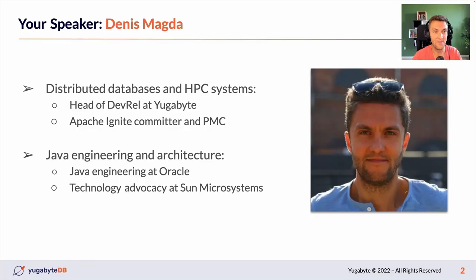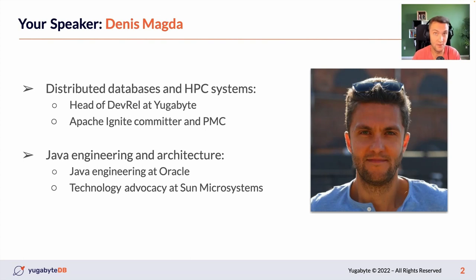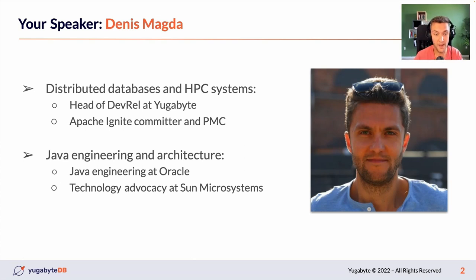A little bit about myself. My name is Denis Magda. I've been working with distributed databases and high-performance computing systems for the last eight years. Right now, I'm the Head of Developer Relations at Yugabyte — a distributed database that is built on PostgreSQL. Before that, I was contributing daily to Apache Ignite, which is another distributed database but designed for high-performance in-memory computing. Before distributed systems, I was on the Java engineering team at Oracle, developing GVM and GDK, and my professional career started at Sun Microsystems where I was advocating for various technologies including NetBeans, Java, Solaris and much more.